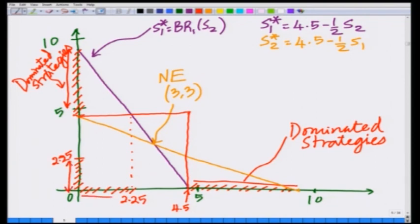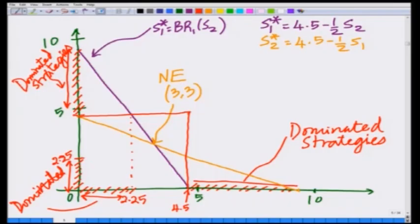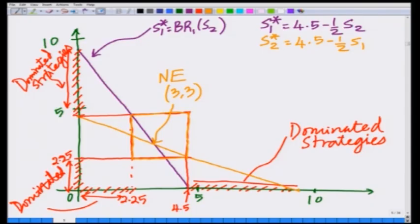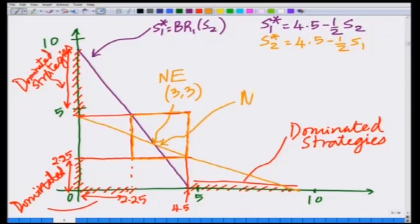Similarly, S2* values between 0 and 2.25 are also dominated strategies in the reduced game. Eliminating these further reduces the game to a smaller box. In this further reduced game, one can again eliminate dominated strategies, and the box keeps shrinking further and further, progressively converging to the Nash equilibrium.